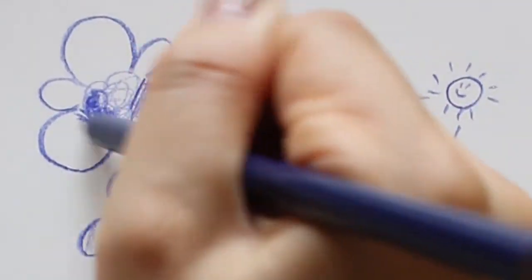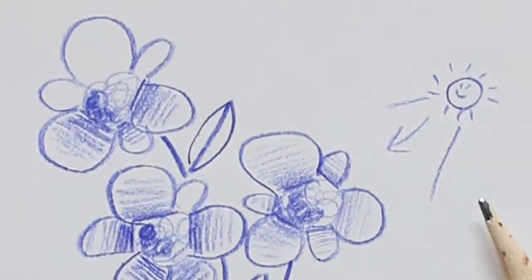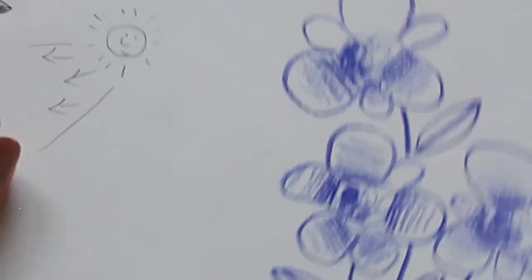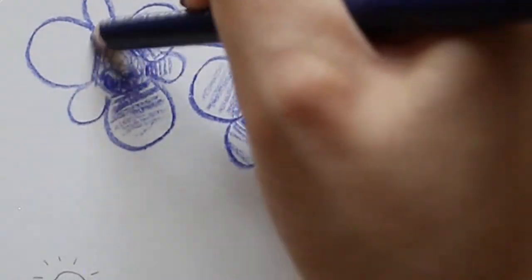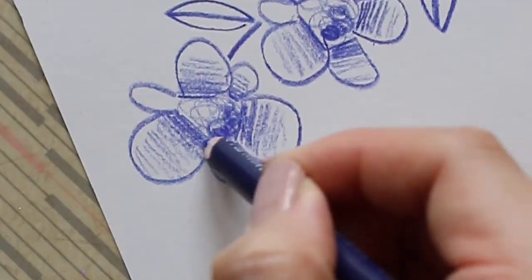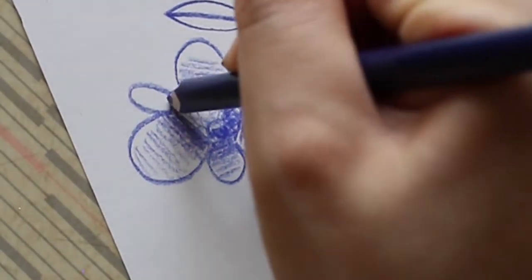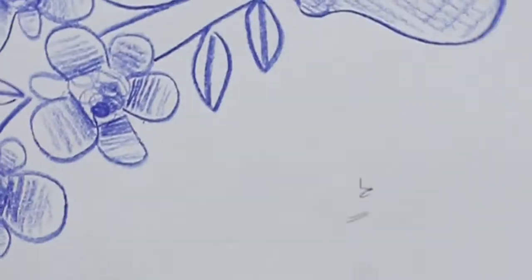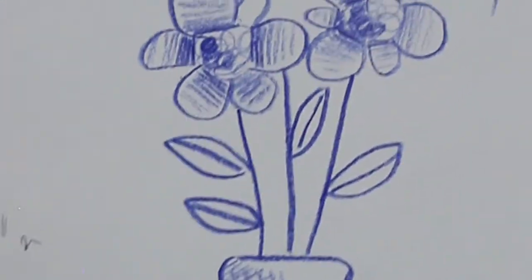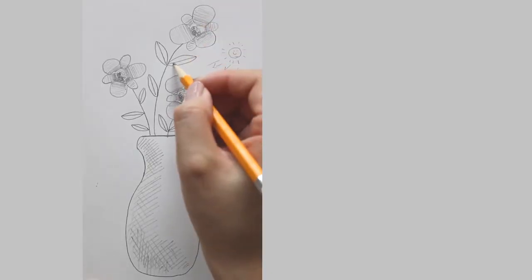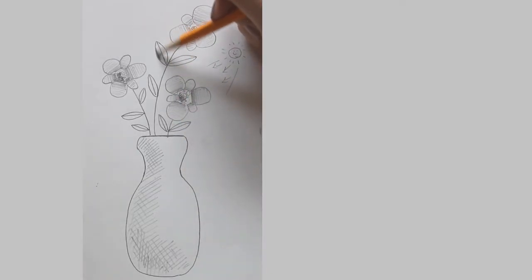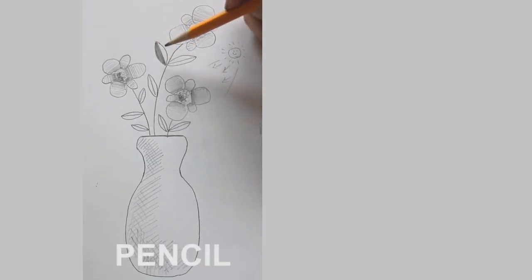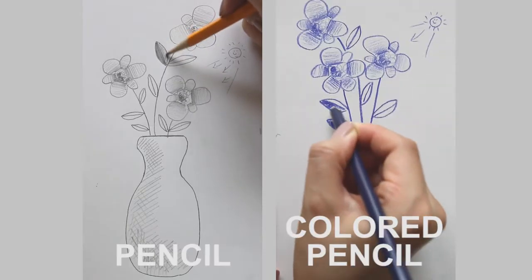Color pencil version follows the same steps as the pencil version. Use only one single color pencil for each vase and its flowers. This way, you can really see and feel the different tones you have created with the shading techniques we've learned together. I will demonstrate both versions so you can see how it will look like in pencil and in color pencil.